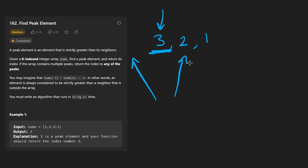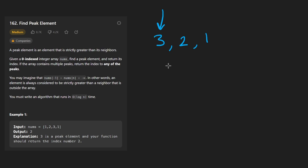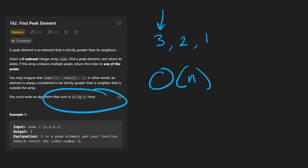Given those facts, we are guaranteed there's going to be a peak element in this array. Our goal is to find it. It'd be pretty easy to do with a linear scan, but they actually want us to do better — we want to do this in O(log n) time.